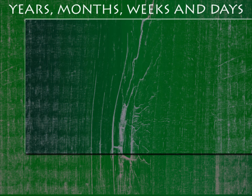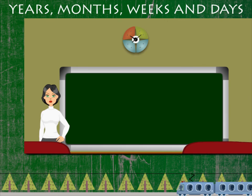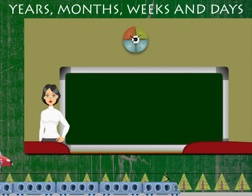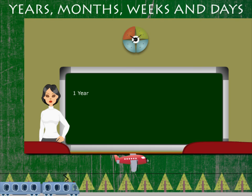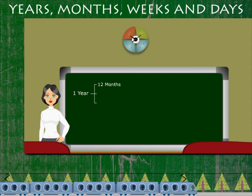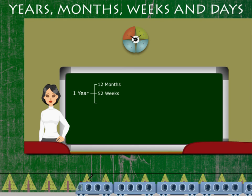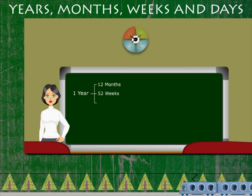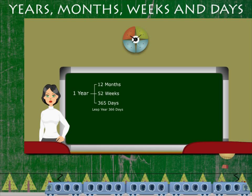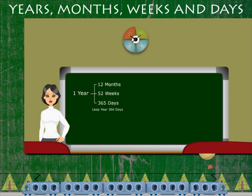Teacher Lucy is here telling us about the calendar. One calendar year has 12 months, or 52 weeks, or 365 days. But a leap year has 366 days and comes once in four years.